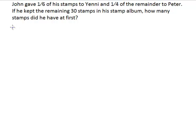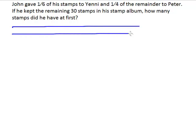We will begin by drawing a model to show the number of stamps that John had at first. We'll be drawing this model with 6 units because, from the question, we know that John gave 1/6 of his stamps to Yenny. Over here, we will show that 1 unit was given to Yenny.